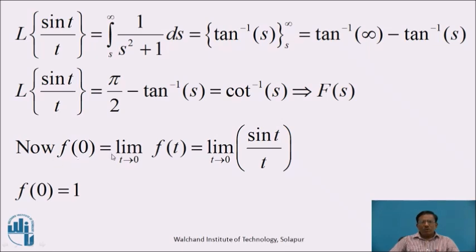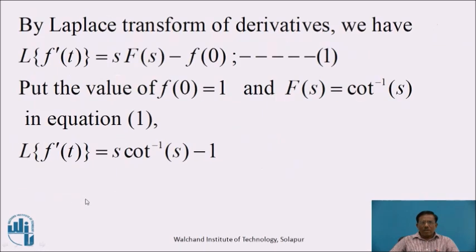Now we find the value of f(0), which means the limit of f(t) as t tends to 0, equal to the limit of sin(t)/t as t tends to 0. From the standard result, we know that limit of sin(t)/t as t tends to 0 is 1. Therefore, f(0) = 1. By Laplace transform of derivatives, L{f'(t)} = s·F(s) − f(0). Substituting the values of F(s) = cot⁻¹(s) and f(0) = 1, we get L{f'(t)} = s·cot⁻¹(s) − 1. This is the required answer.